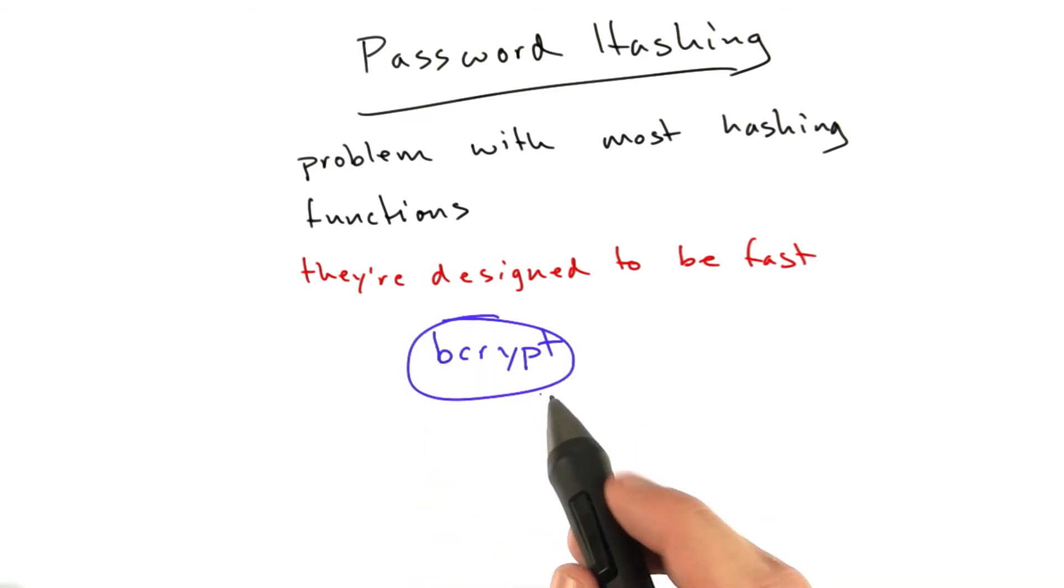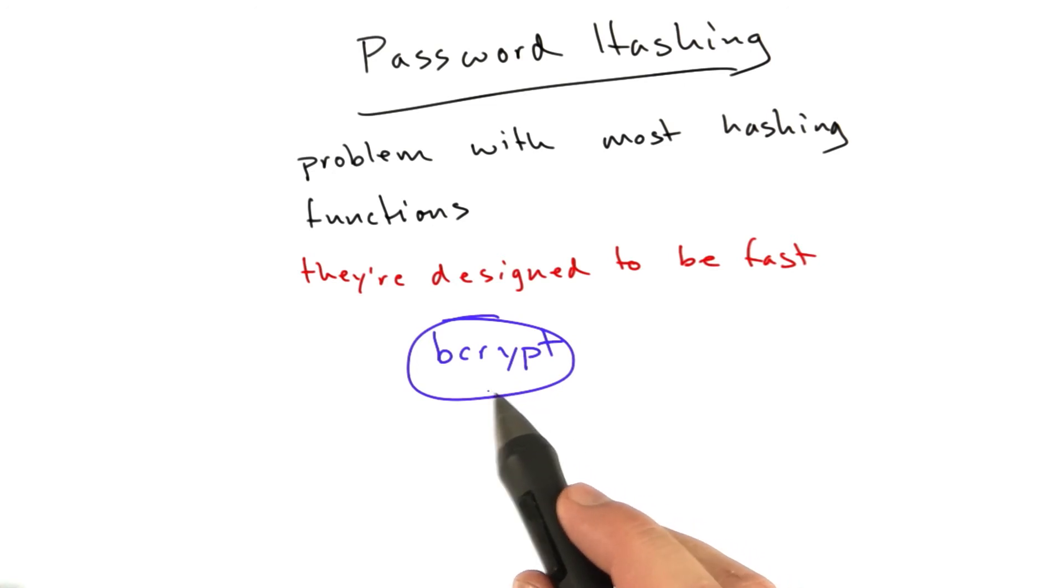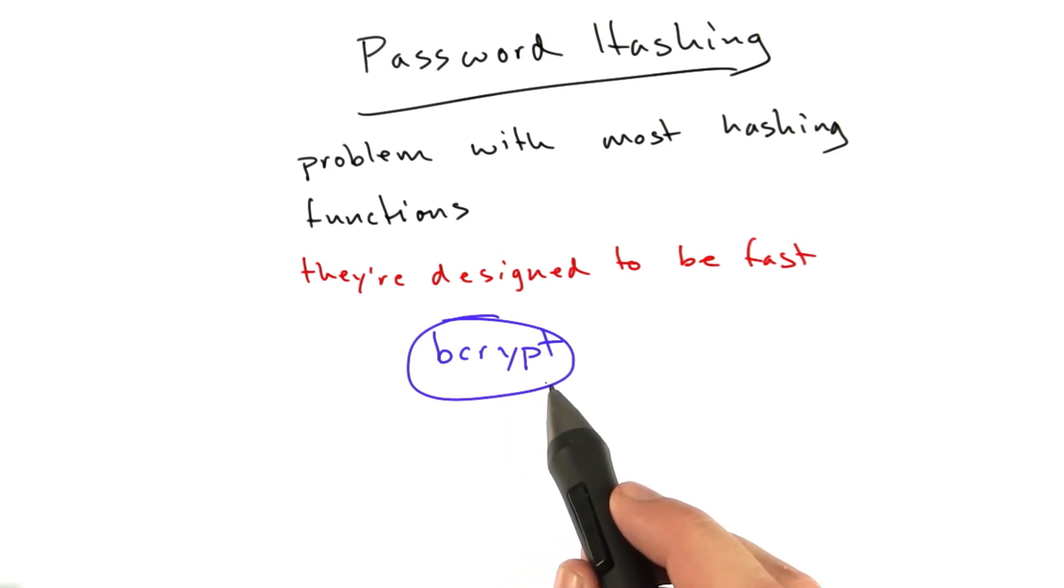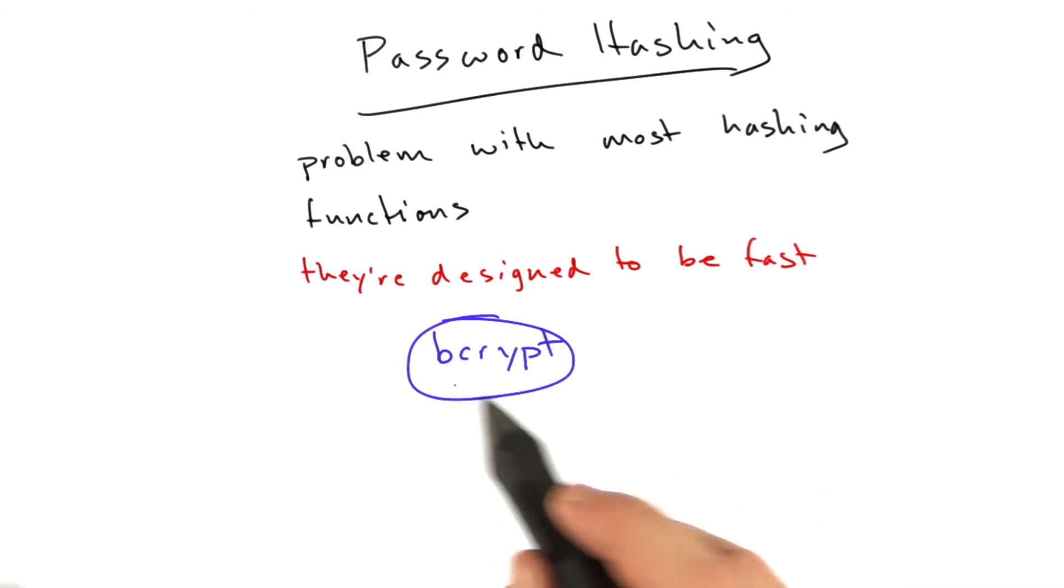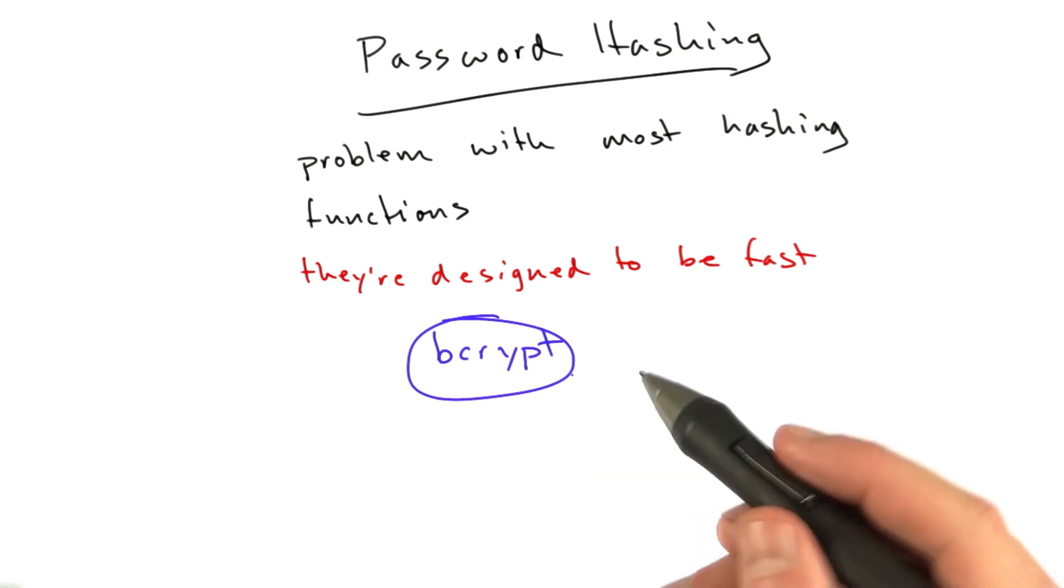use bcrypt instead, and your life will be better. And bcrypt is cool. It basically takes an extra parameter, which is how long do you want this to take. So now you have this function that will stay slow forever because you can make it slow.